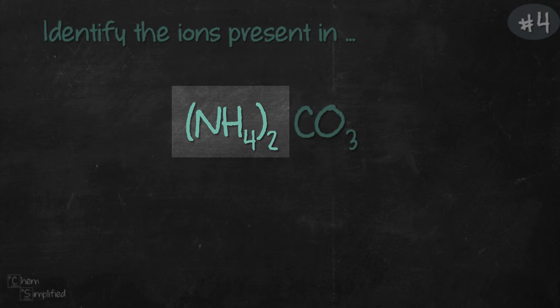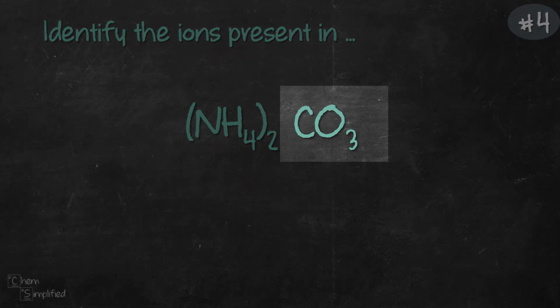Well, that means we actually have two groups of NH4. And then we have another group, which is CO3. And we actually have only one group of that because there's no bracket.